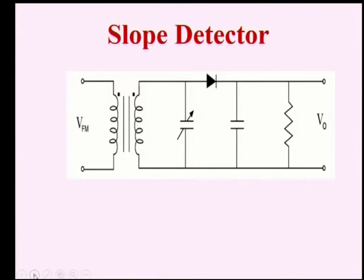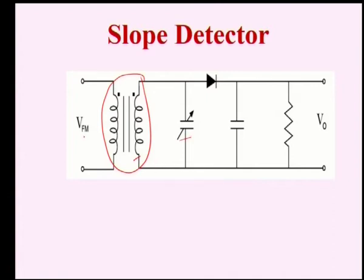This is the simple circuit that shows the slope detector. It consists of a tank circuit or tuning circuit. The incoming frequency modulated wave is fed to a transformer, and the secondary of the transformer along with a variable capacitor acts as a tuning circuit. We will see how the variation in frequency is converted into amplitude, after which we can use a simple diode detector to detect the original signal.